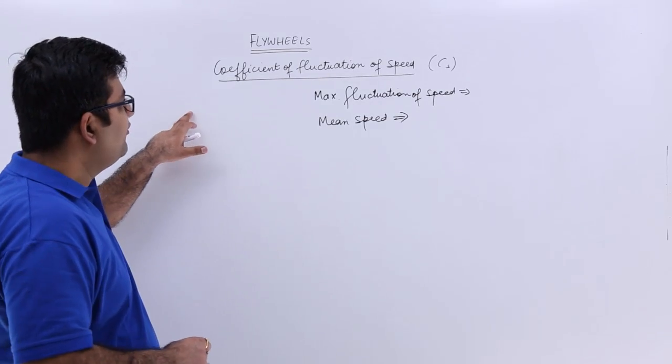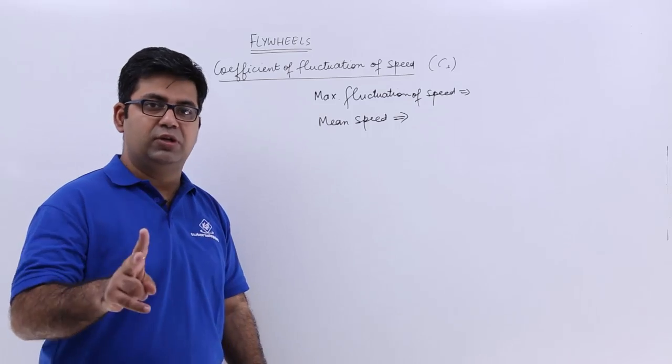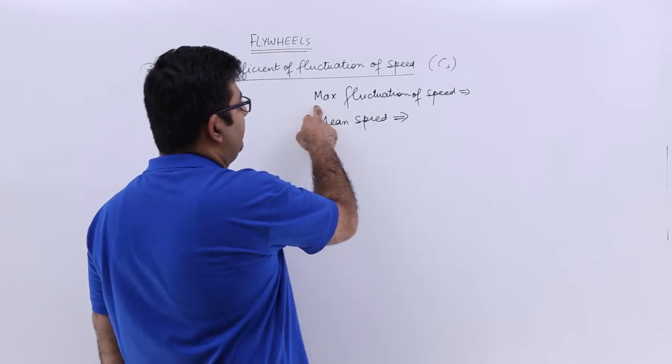Now let's talk about the coefficient of fluctuation of speed. This uses two terms. The first term is the maximum fluctuation of speed.